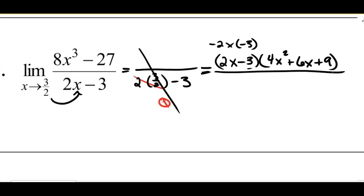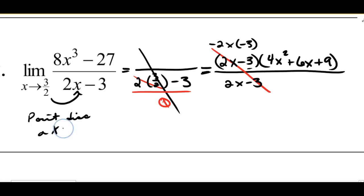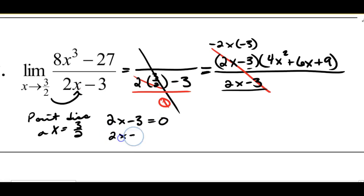My denominator is still 2X minus 3, and that's convenient because now that denominator factor cancels out. This means I have a removable or point discontinuity at X equals 3/2. I could take 2X minus 3, set it equal to 0, so 2X equals 3, divide both sides by 2, and X equals 3/2. If I plugged 3/2 in and multiplied, I'd get 0 in the denominator — the function is undefined there. But now that I've canceled that out, I can still take my limit.